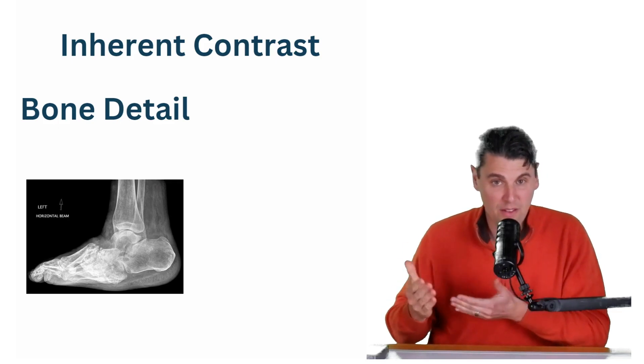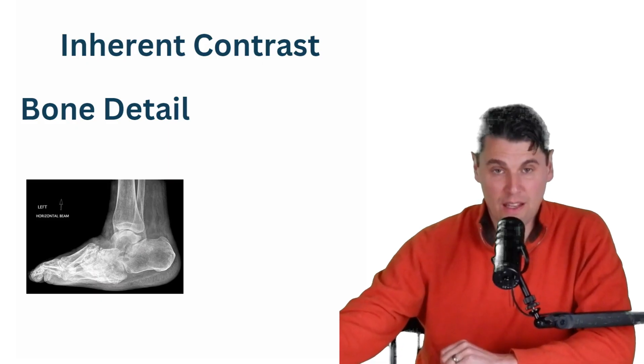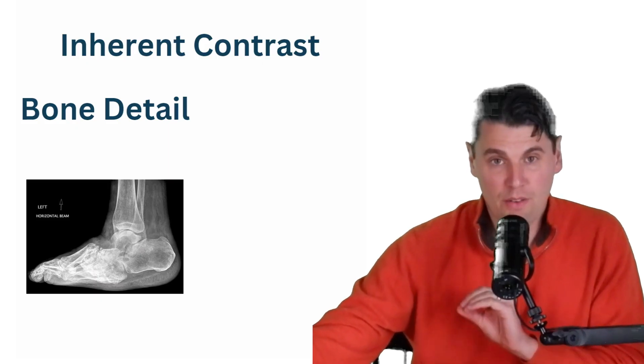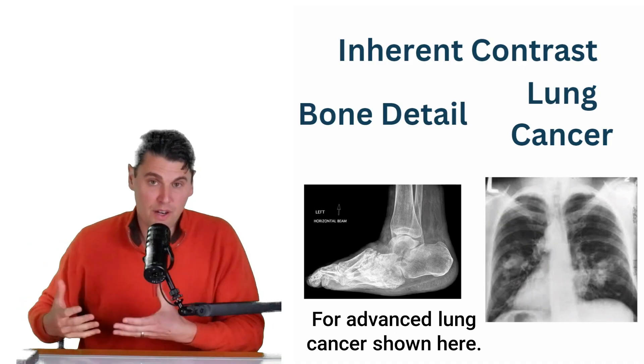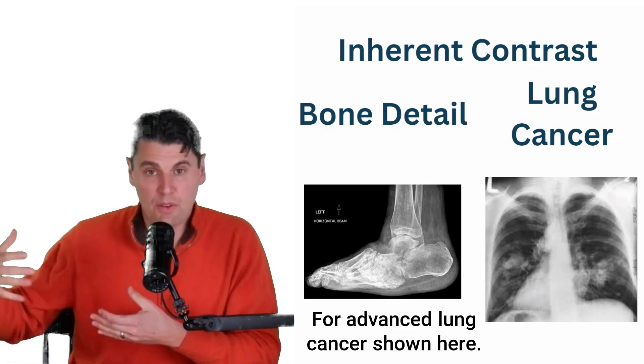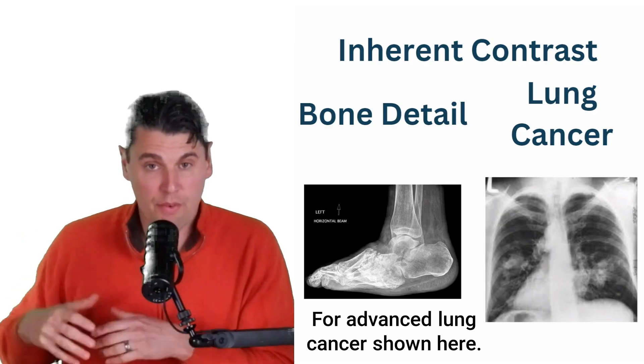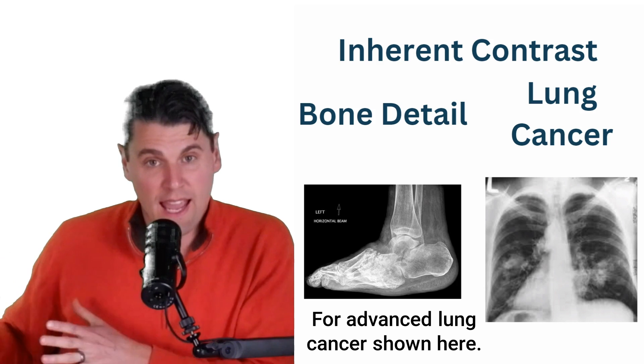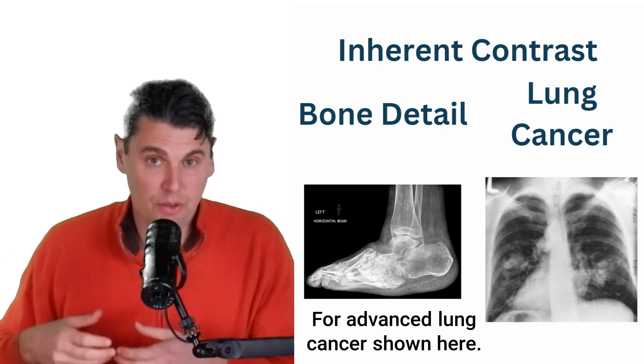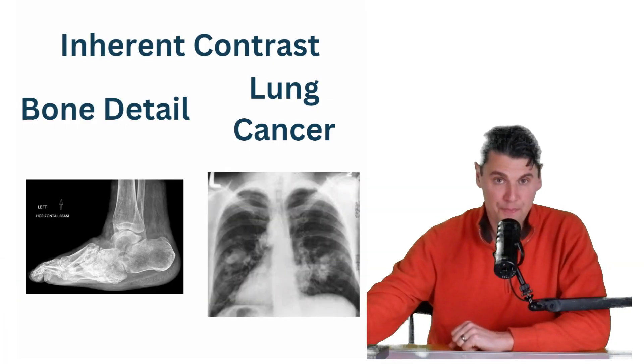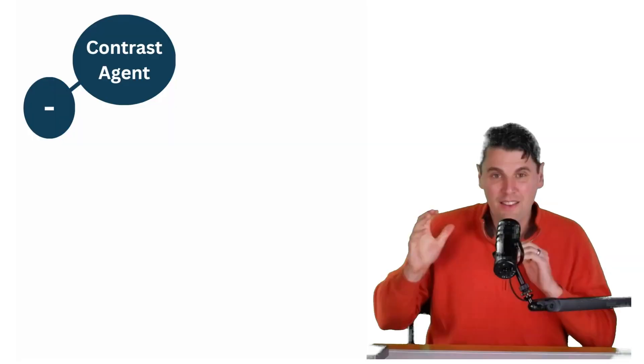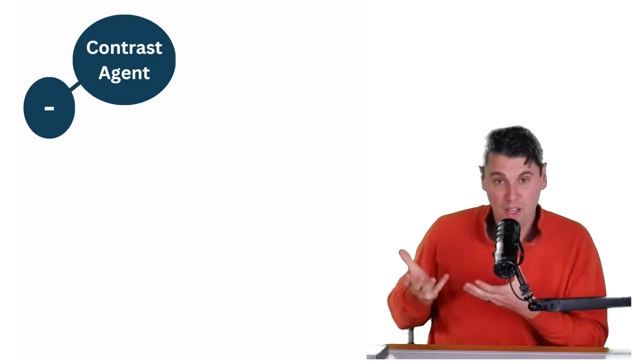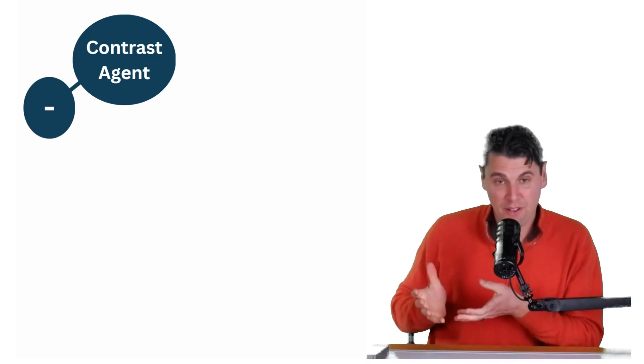There is inherent contrast in your X-ray images, especially in bony anatomy. You can really see the contrast very well. You can see high resolution structures very well in the bony anatomy because of the relative high Z of the bony anatomy. In lung cancer, for instance, you can see that very well.